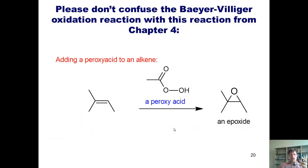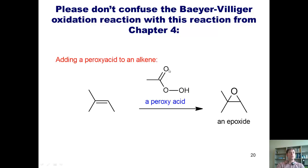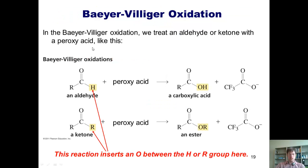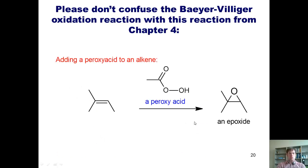Don't confuse the Baeyer-Villiger oxidation with the epoxidation reaction from Chapter 4. If you have an alkene and treat it with a peroxy acid, the alkene gains a bond to oxygen and converts into an epoxide. Although both reactions involve the same reagent — a peroxy acid — they do completely different things. The Baeyer-Villiger oxidation converts an aldehyde into a carboxylic acid or a ketone into an ester, while epoxidation takes an alkene and converts it into an epoxide.